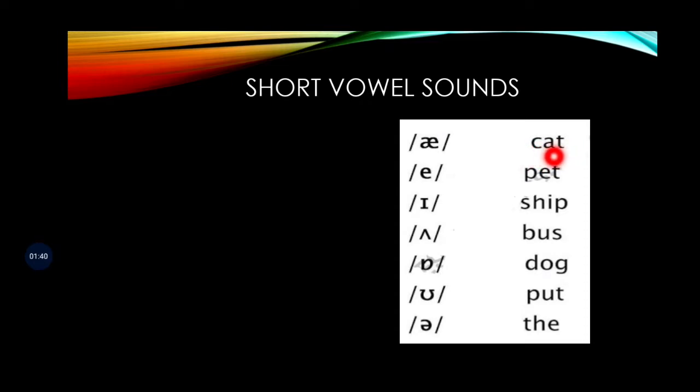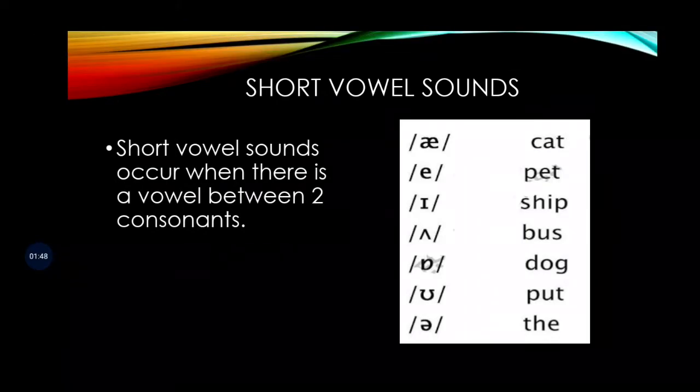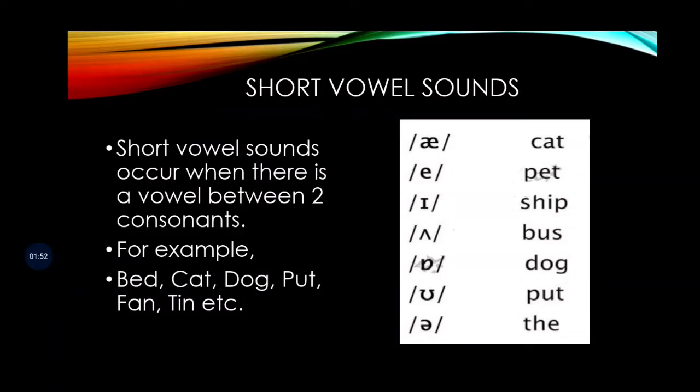Whenever there is a vowel between two consonants, then it creates a short vowel sound. Short vowel sounds occur when there is a vowel between two consonants, for example: bed, cat, dog, put, fan, tin.